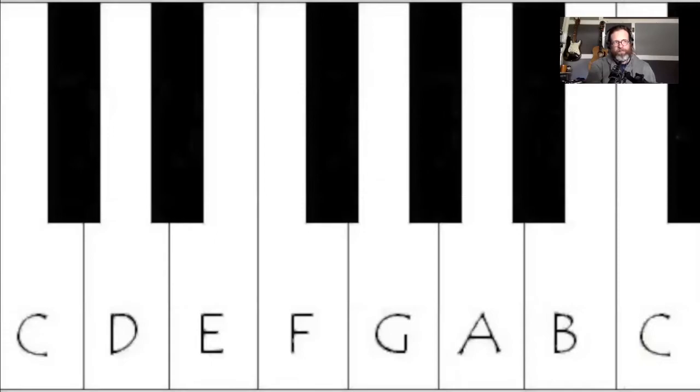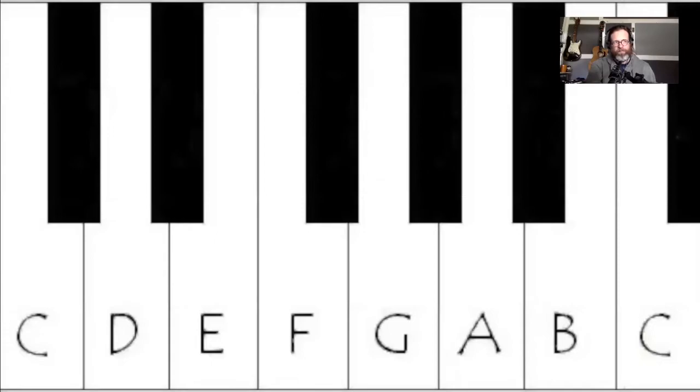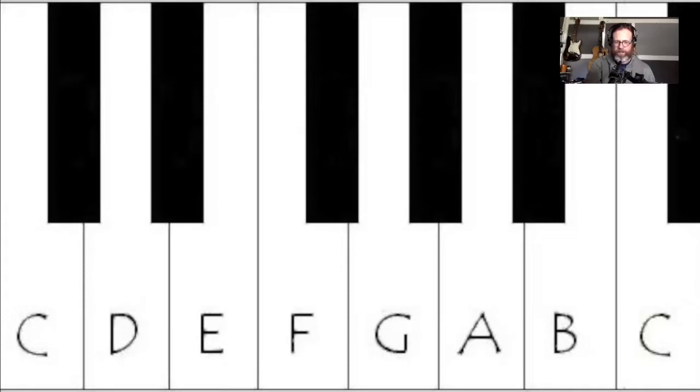If you remember from previous lectures in your intro to theory class, we looked at the natural notes in the keyboard and that there were two naturally occurring half steps between the notes E and F, and B and C, and all the rest were whole steps.